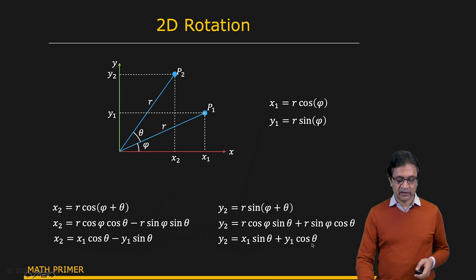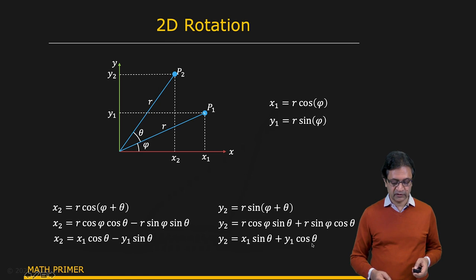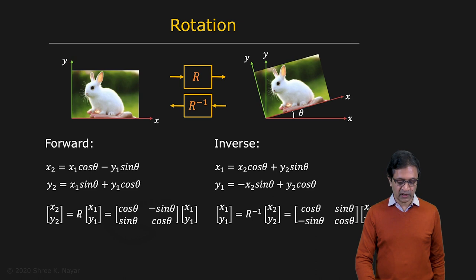Again, this can be expressed using a two by two transformation matrix. So here is your two by two transformation matrix. Since it's a rotation, this time we'll call it R. So X1 multiplied with R gives you X2 and R is cosine theta minus sine theta sine theta cosine theta.